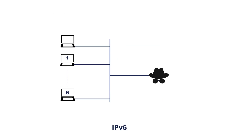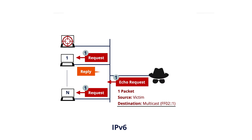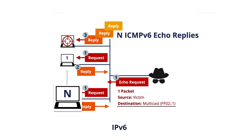The Smurf Attack in IPv6 works the same way, with the difference that there is no IPv6 broadcast. Instead, multicast can be used — for example, using the all-nodes multicast address ff02::1. The behavior would be the same as in IPv4, resulting in n ICMPv6 echo reply messages reaching the victim.